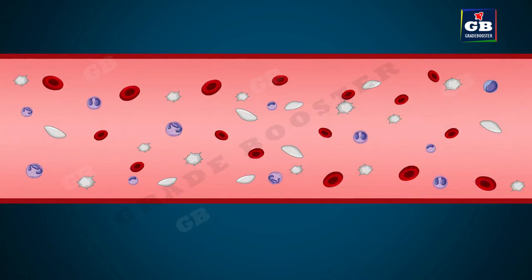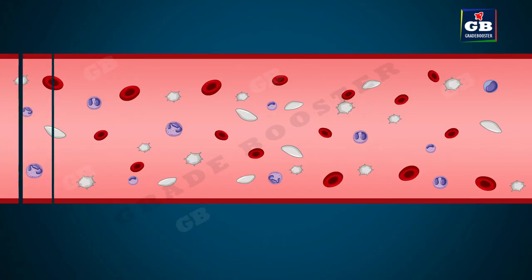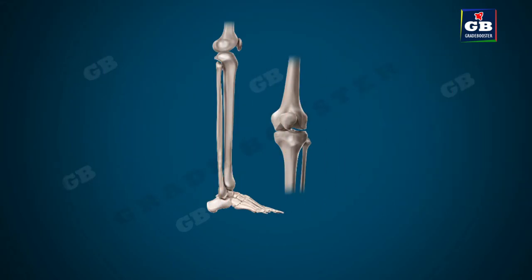Blood is a fluid connective tissue that connects the different parts of the body. Bone is another connective tissue that gives shape and support to the body.